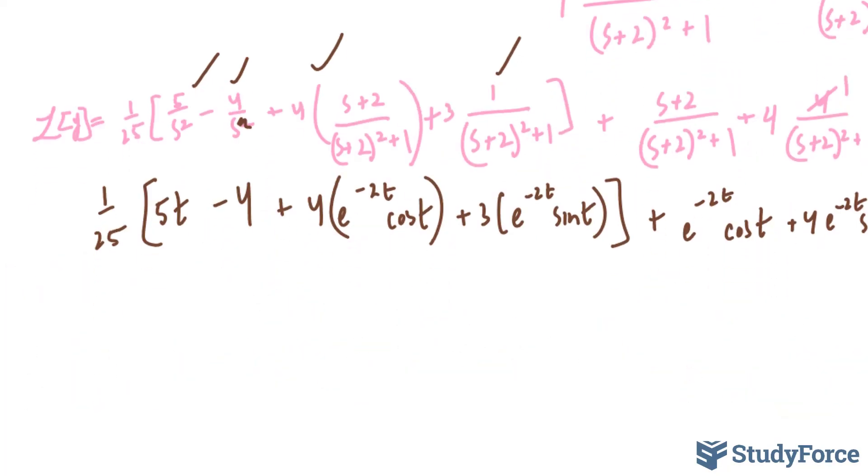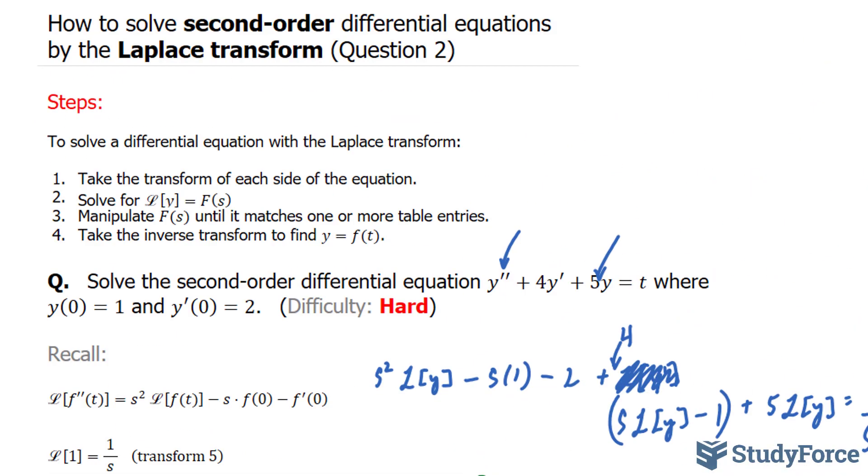If you want to simplify this further, and you can, it just requires some more algebraic manipulation, you should end up with y = 1/25 bracket [5t - 4 + 29e^(-2t) cos t + 103e^(-2t) sin t]. And so there you have it. That is how to solve a second-order differential equation by the Laplace transform.